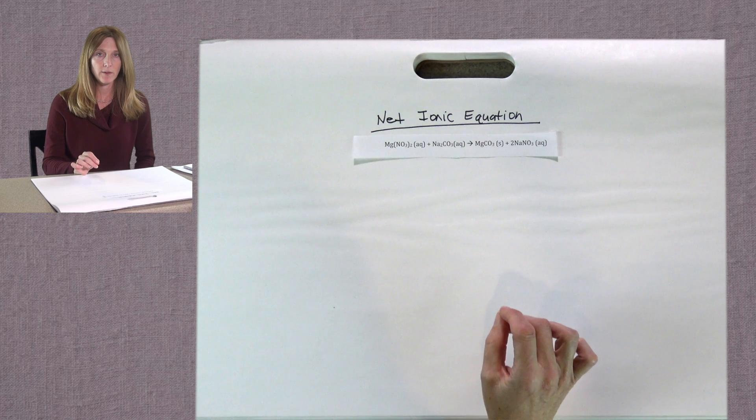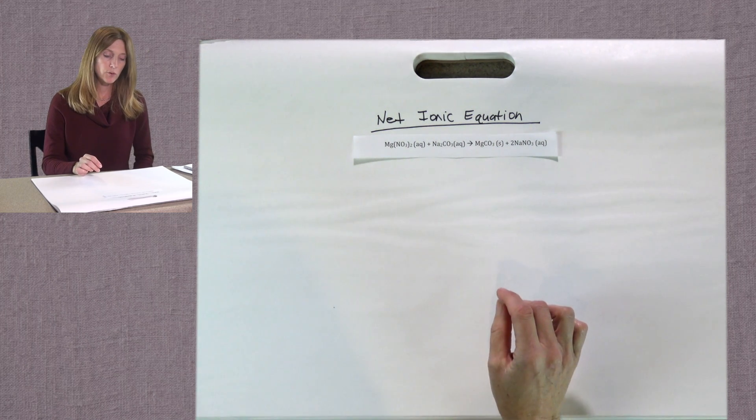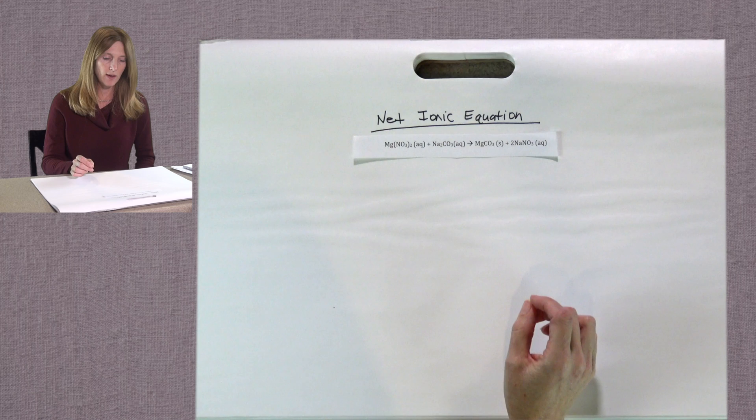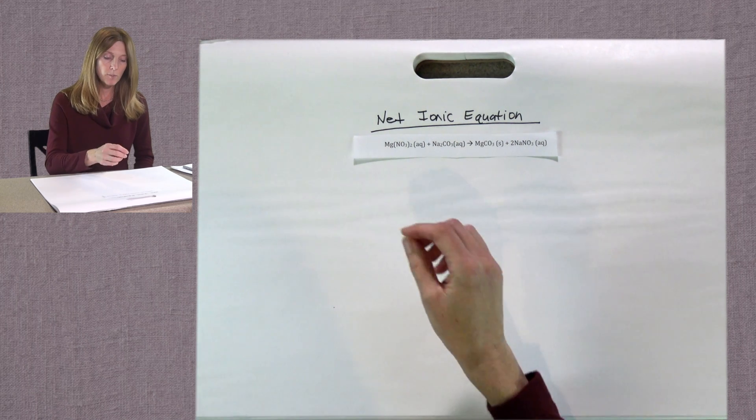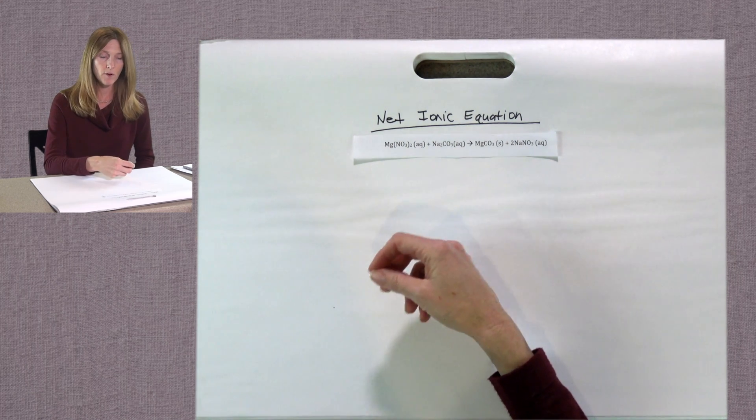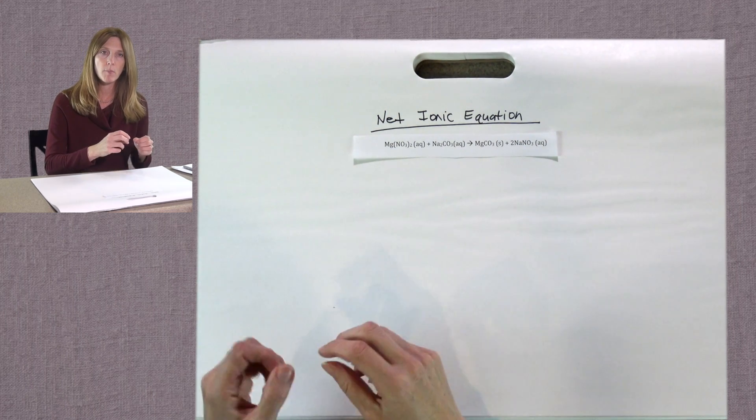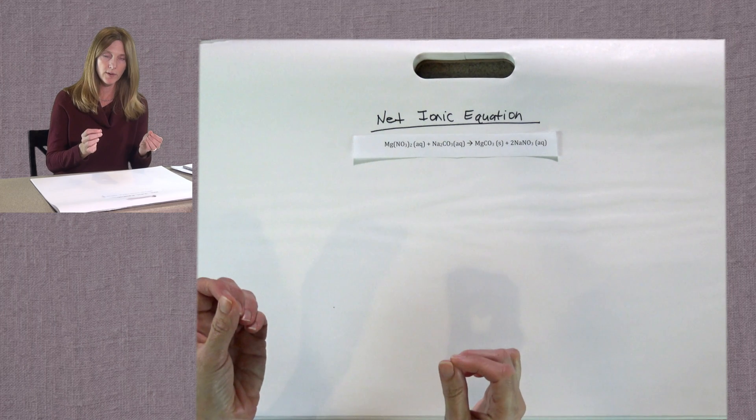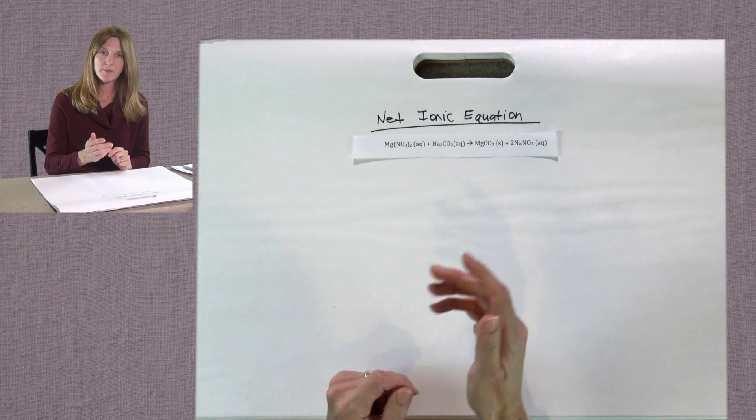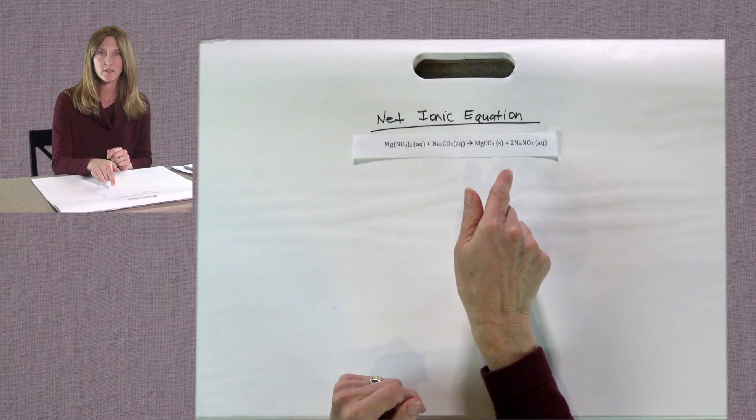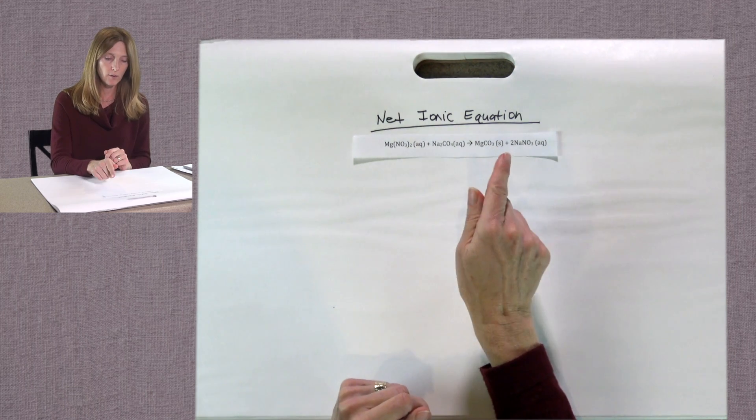Sometimes when working with ionic compounds, it's useful to separate the ions out. This is because ionic compounds, some of them are soluble in water. When you dissolve them in water, they come apart into their two separate ionic components. So sometimes it is useful to write reactions such as these in a net ionic equation.